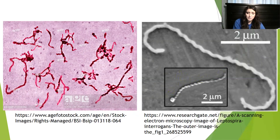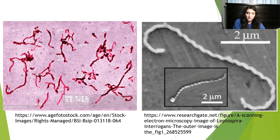Leptospirointerrogens is a very difficult disease to pinpoint because of its symptom similarities to the flu and other common illnesses. Its symptoms have a wide range and include fever, chills, headache, nausea, muscle aches, vomiting, jaundice, and abdominal pain — it just sounds like a really bad flu, right? If left untreated, the disease can lead to kidney or liver failure, meningitis, or even death.